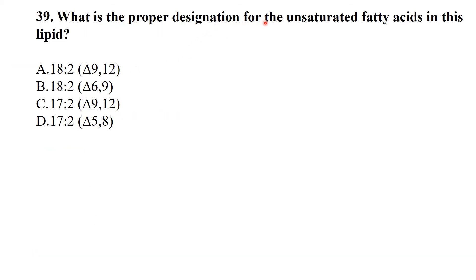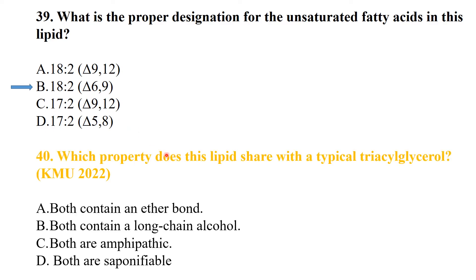Q37: What is the proper designation for an unsaturated fatty acid that has 18 carbons and 2 double bonds — one at position 6 and one at position 9? The designation is 18:2 delta 6, delta 9.